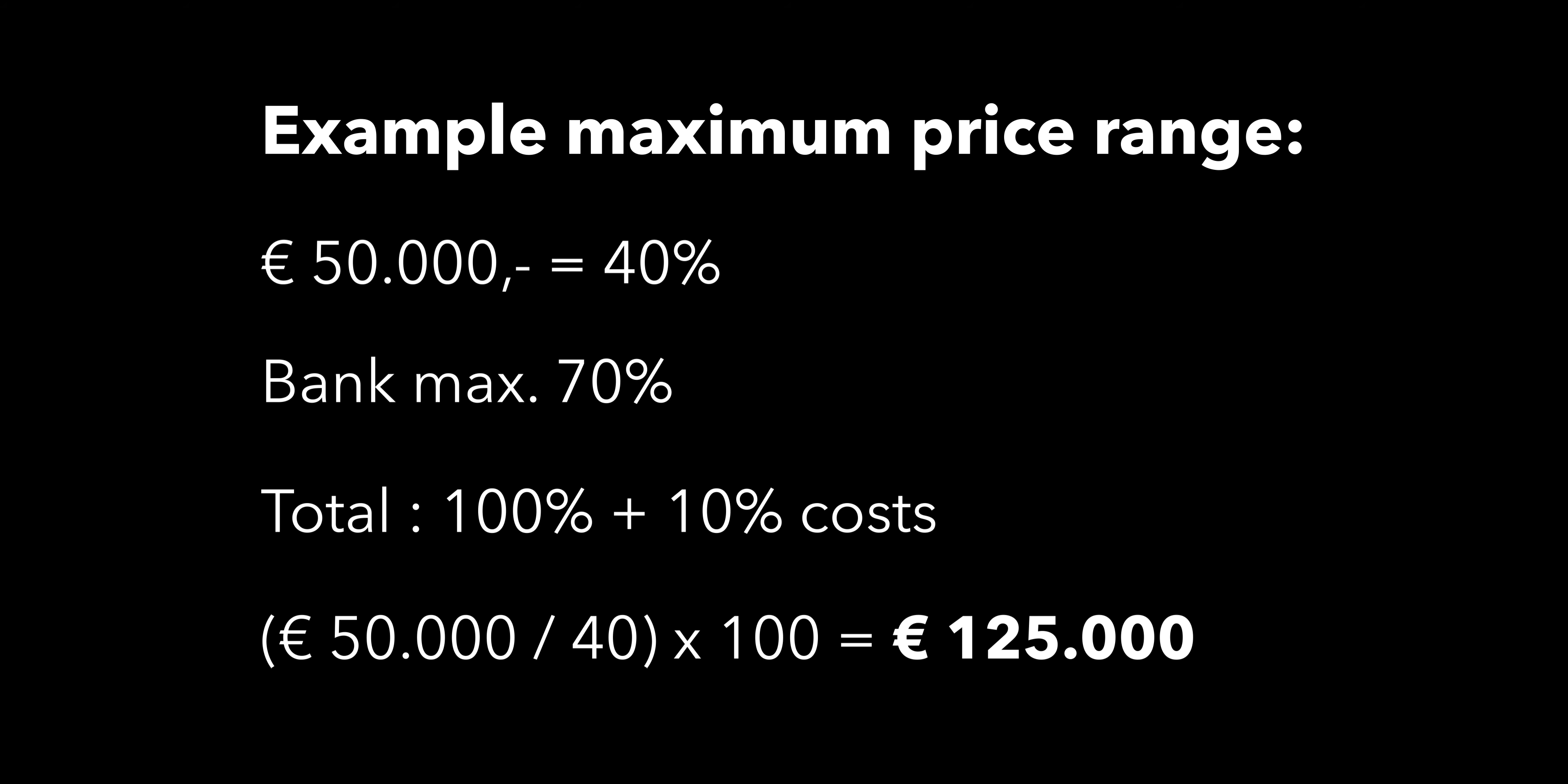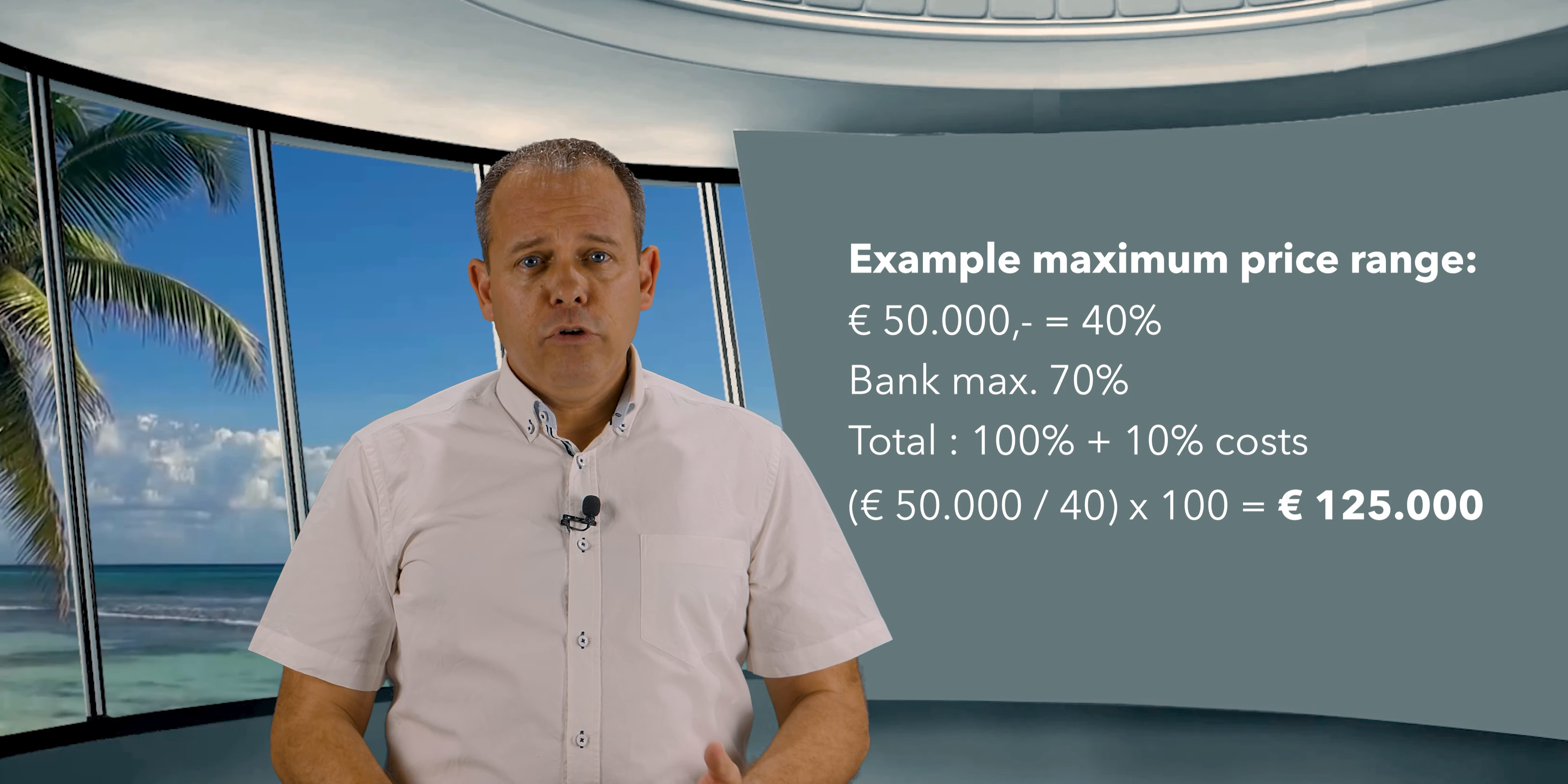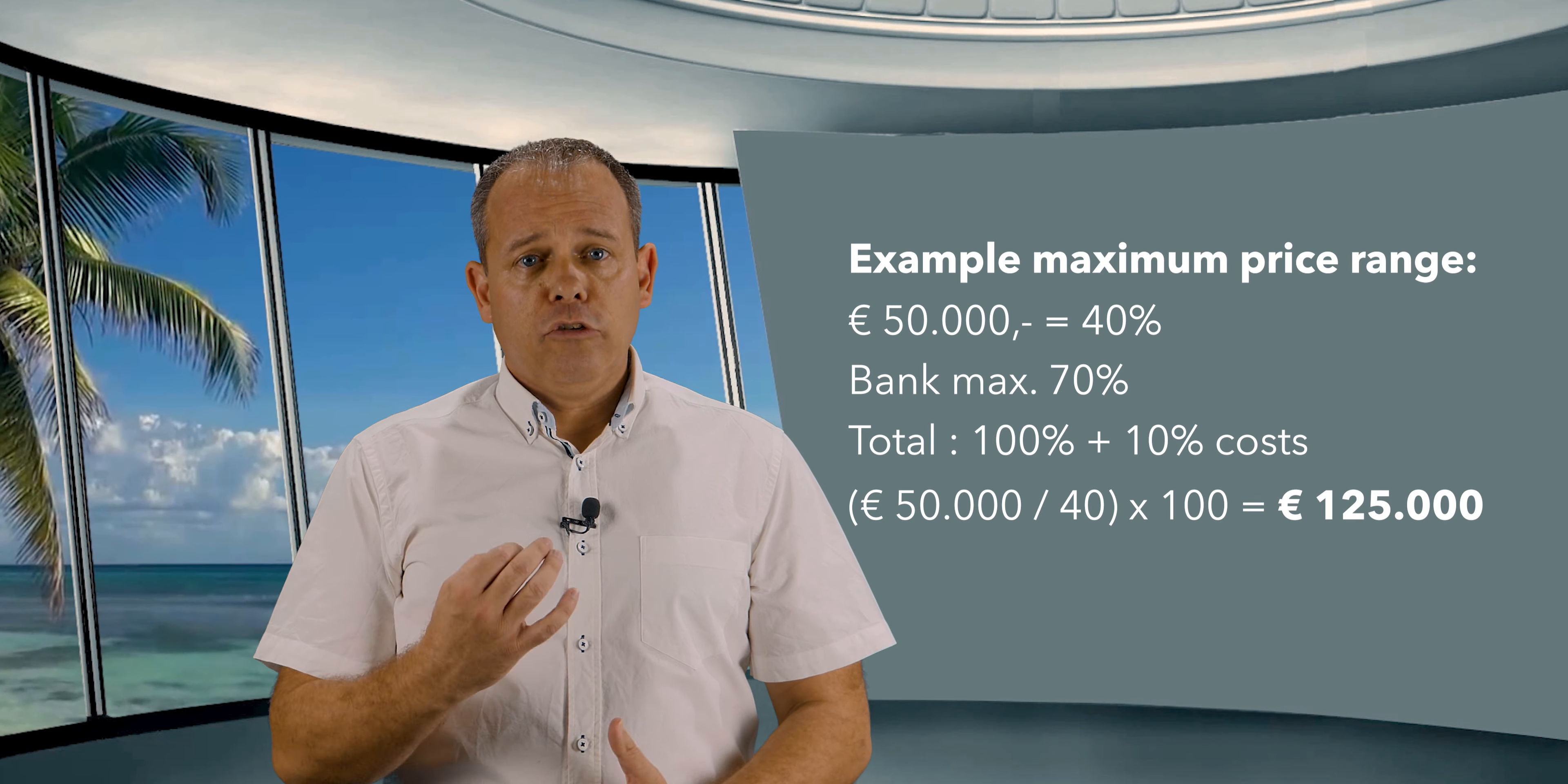In this example, you could buy a property for a maximum purchase price of 125,000 euros. Besides, you can't spend more than 30 percent of your income to pay the monthly installments of the mortgage on your Spanish property.